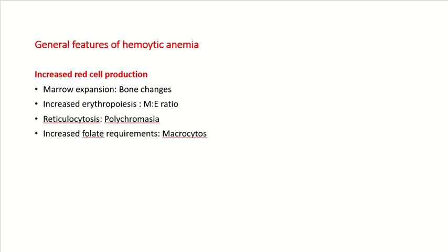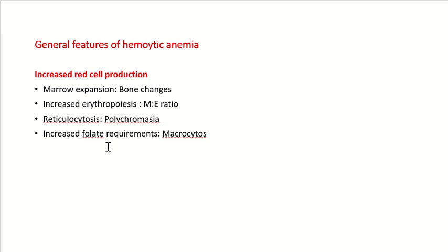As there is compensatory increase in red cell production, in the bone marrow there will be increased erythropoiesis. The myeloid-to-erythroid (ME) ratio will be reversed — normally there is more myeloid component compared to erythroid, but here there will be more erythroid component and this ratio becomes 1:1 or less than 1. There will be increased reticulocytosis with premature RBCs coming out of the bone marrow, represented as polychromasia. Due to increased production of RBCs, folate requirement of the body will increase, which leads to macrocytosis.